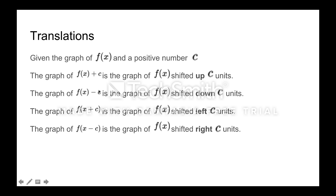If we have f minus c, it's the same graph but the whole thing is shifted down c units. If we have f of x plus c — so now the plus c is inside the function — the graph gets shifted left. And if we have f of x minus c inside the function, the graph gets shifted right. So outside is up or down, inside is left or right. Outside does what you expect: plus goes up, minus goes down. Inside does the opposite of what you would expect: plus goes left, and minus goes right.